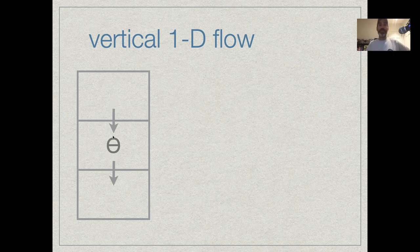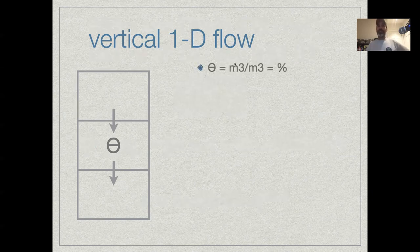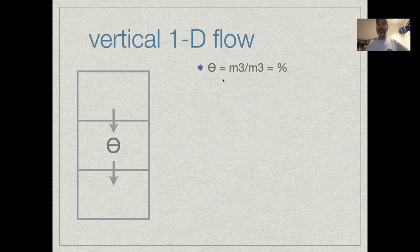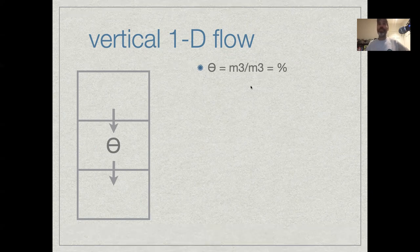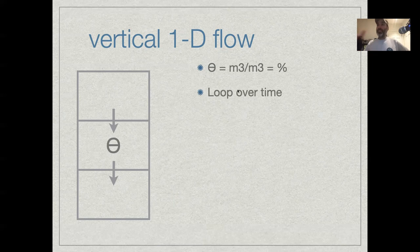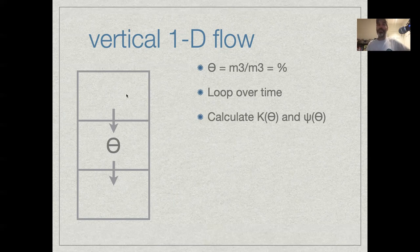We're also going to assume that our flow is going to basically be going downhill. So our state variable of interest is our soil moisture, and let's say we decide to measure that on a percentage basis, cubic meters of moisture per cubic meters of soil. To model this as a dynamic process, we need to set up a loop over time, because moisture is going to be flowing through the soil, so it's changing both in space and in time. We need to begin by calculating the current conductivity and current water potential in each grid cell, because that's going to drive that flux.